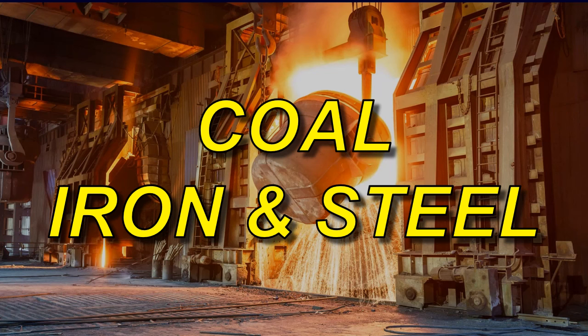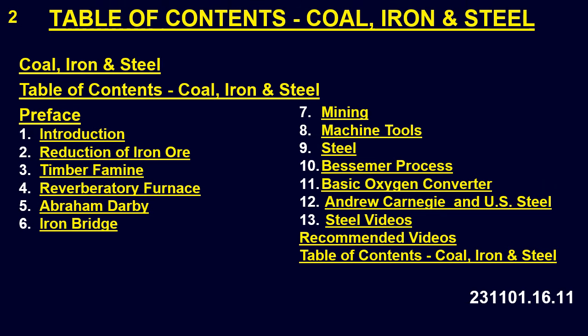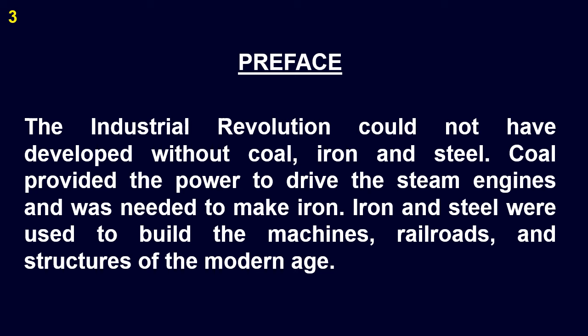Coal, Iron and Steel. The Industrial Revolution could not have developed without coal, iron and steel. Coal provided the power to drive the steam engines and was needed to make iron. Iron and steel were used to build the machines, railroads and structures of the modern age.